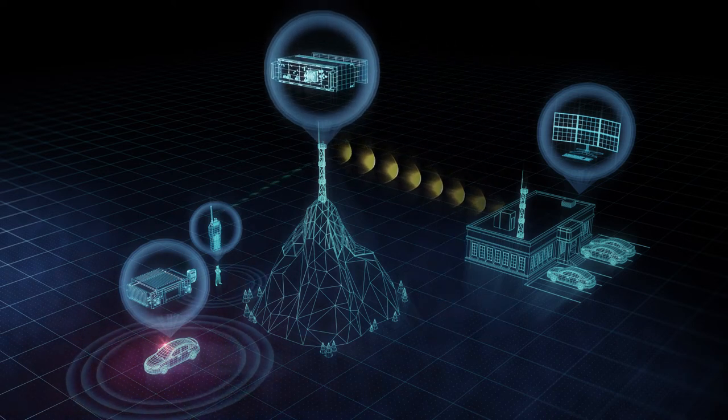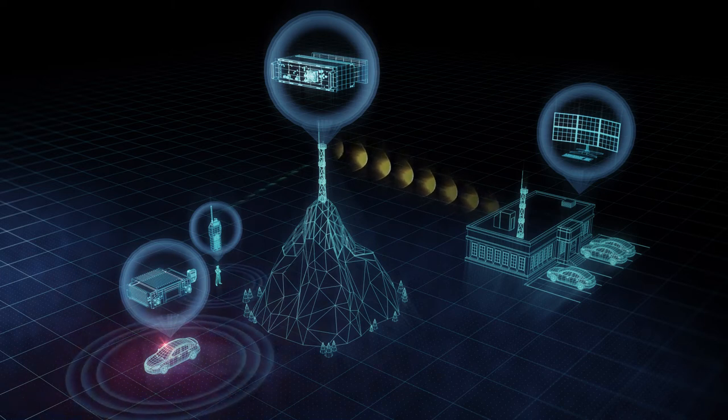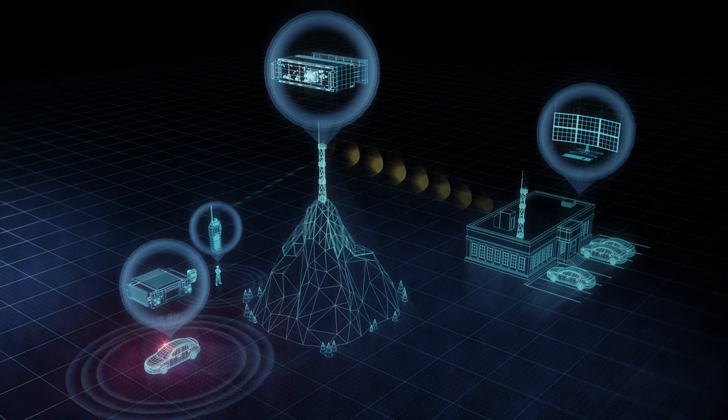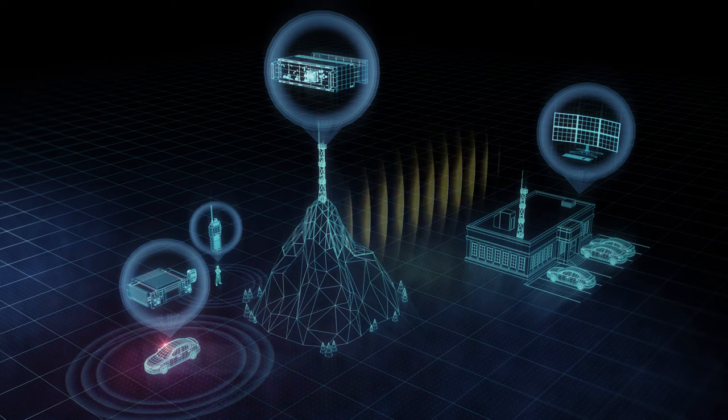Another approach is to move the base station infrastructure to the remote location to provide better coverage. The remote base station must then be connected back to central control or console from which field communications are managed. Audio and system control between the remote base station and the central console is known as a backhaul.